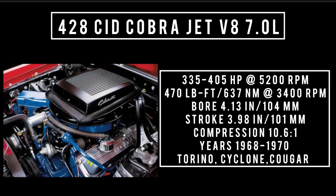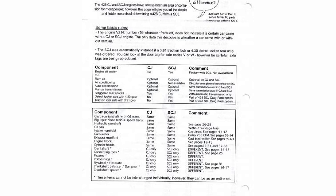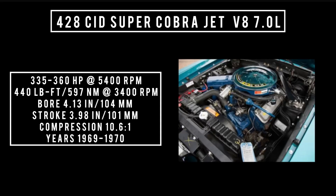Introduced in 1969: the 428 Super Cobra Jet. It used the same top end as the Cobra Jet, but the crankshaft and connecting rods were strengthened with cap screws instead of bolts for greater durability and to withstand higher RPMs. It could produce anywhere between 335 to 360 horsepower at 5,400 RPM, 440 pound-feet or 597 newton meters at 3,400 RPM, with a bore of 4.13 inches and a stroke of 3.98 inches. Compression was 10.6 to 1. Used 1969 through 1970, found in the Torino.